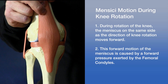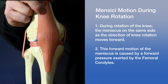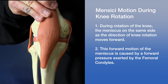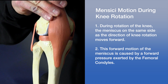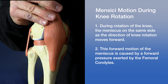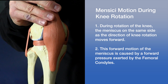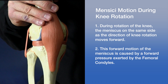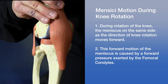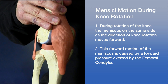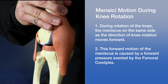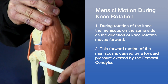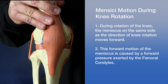The next aspect is meniscal motion during knee rotation. During either medial or lateral rotation of the knee, the ipsilateral meniscus — the meniscus on the same side — moves forward due to pressure from the condyle. So during medial rotation, the medial meniscus moves forward, and during lateral rotation, the lateral meniscus moves forward.